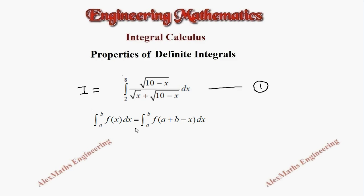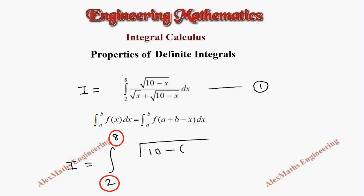The first property we are going to apply is: integral from a to b of f(x) dx equals integral from a to b of f(a plus b minus x) dx. So we have to add both limits and put minus x in place of x. I will become integral from 2 to 8, and in place of x we put a plus b minus x, where a plus b is 2 plus 8.